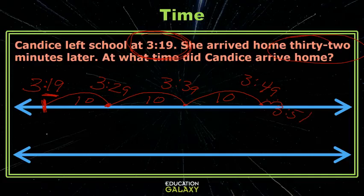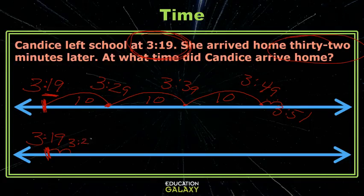Maybe you'd like to do that a different way — maybe you'd like to count the 2 of the 32 first. Are you allowed to do that? Of course you can. If that works for you, that's just fine. So let's count that 2. 1 is 3:20, 2 is 3:21.